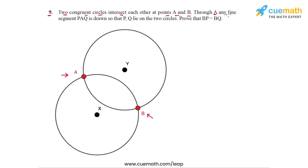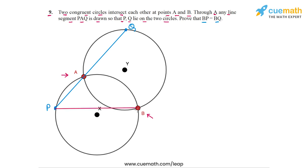Through the point A, any line segment PAQ is drawn so that P and Q lie on the two circles. This line is not drawn yet, so let's draw line PAQ through point A. Let this be one such line — we call this point P and this becomes point Q.